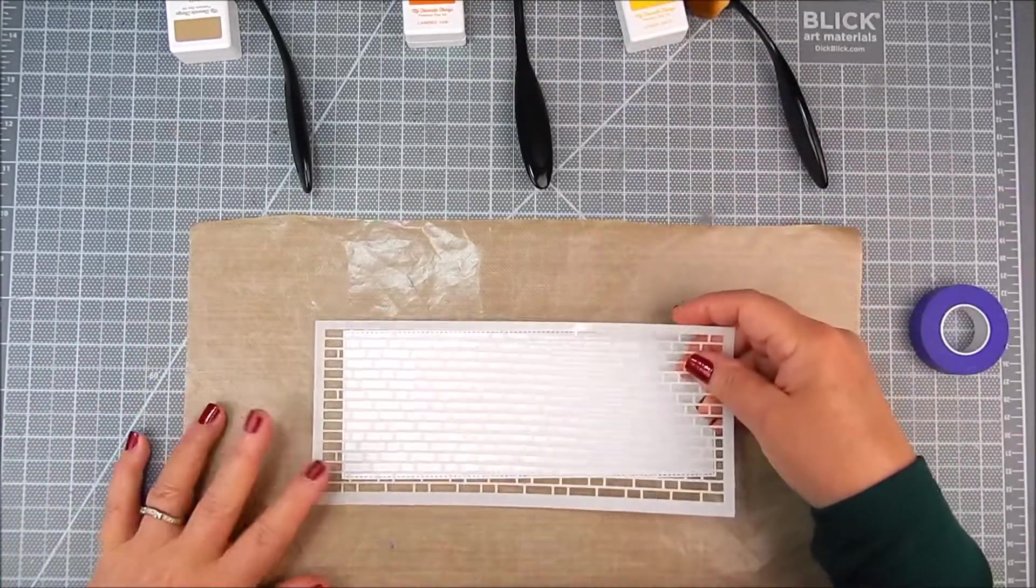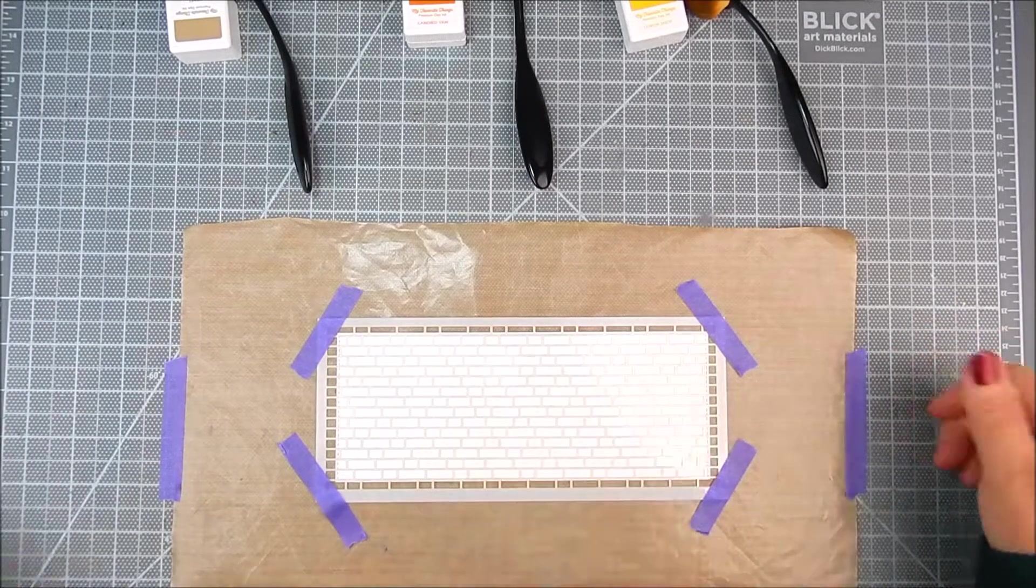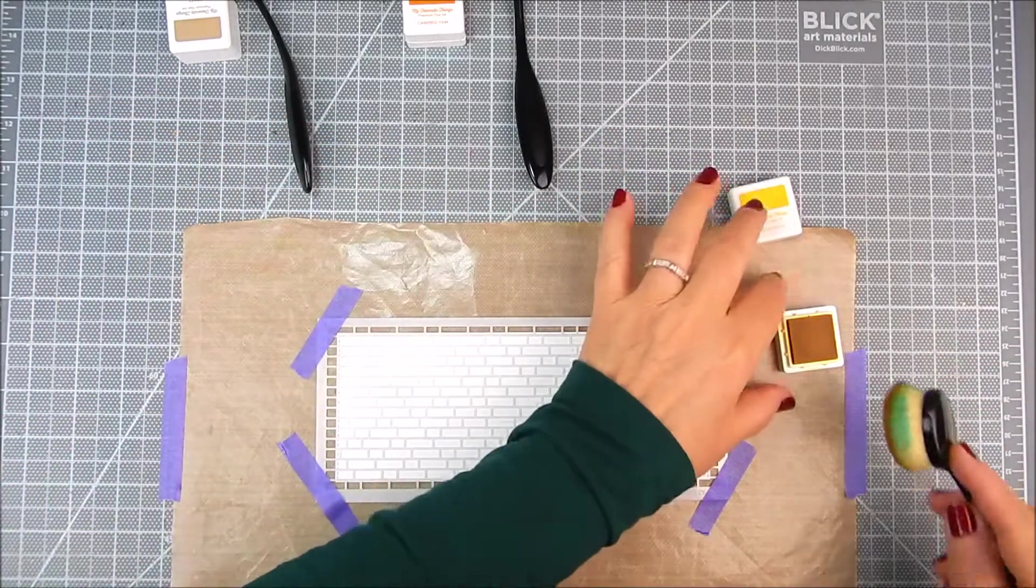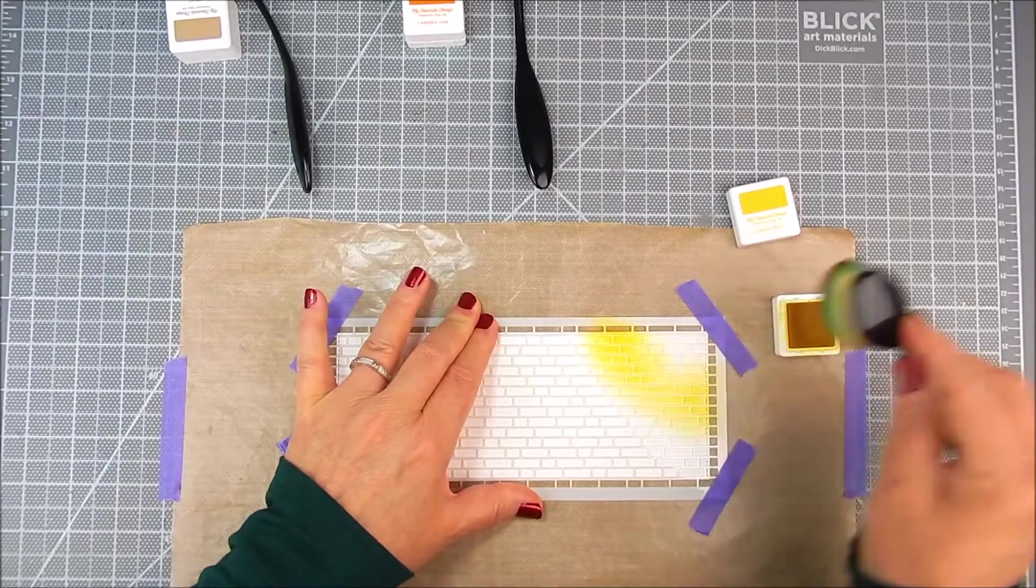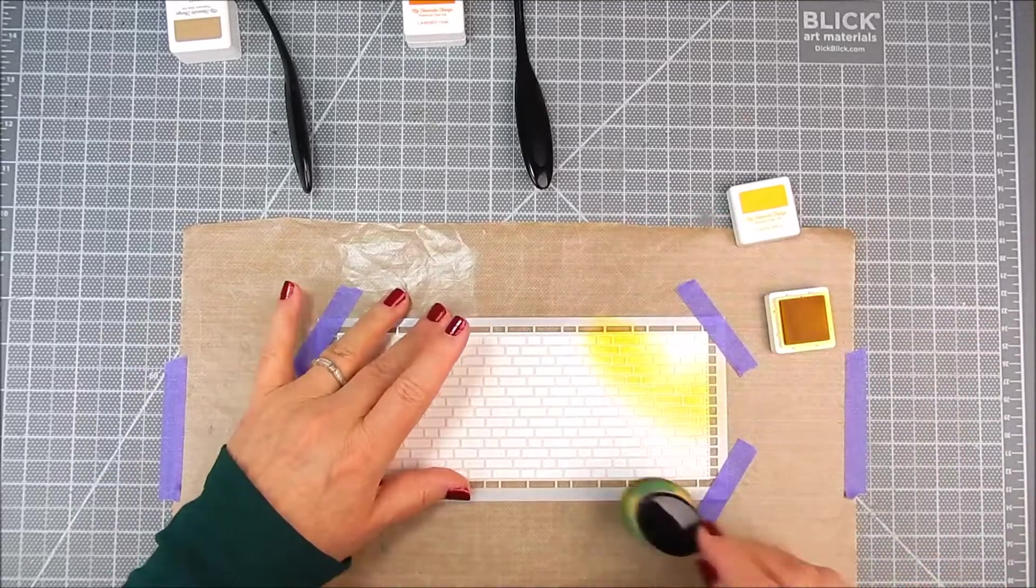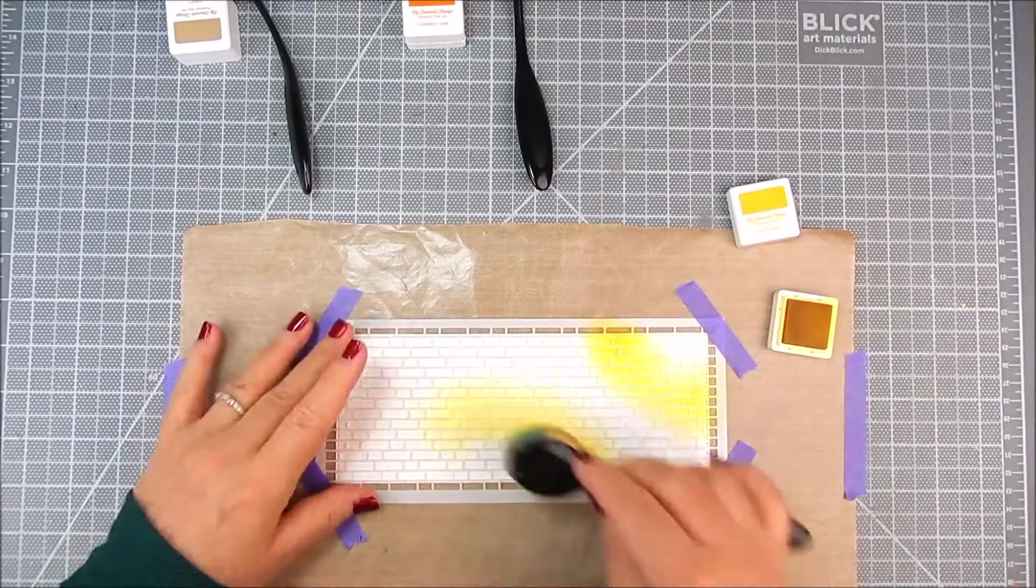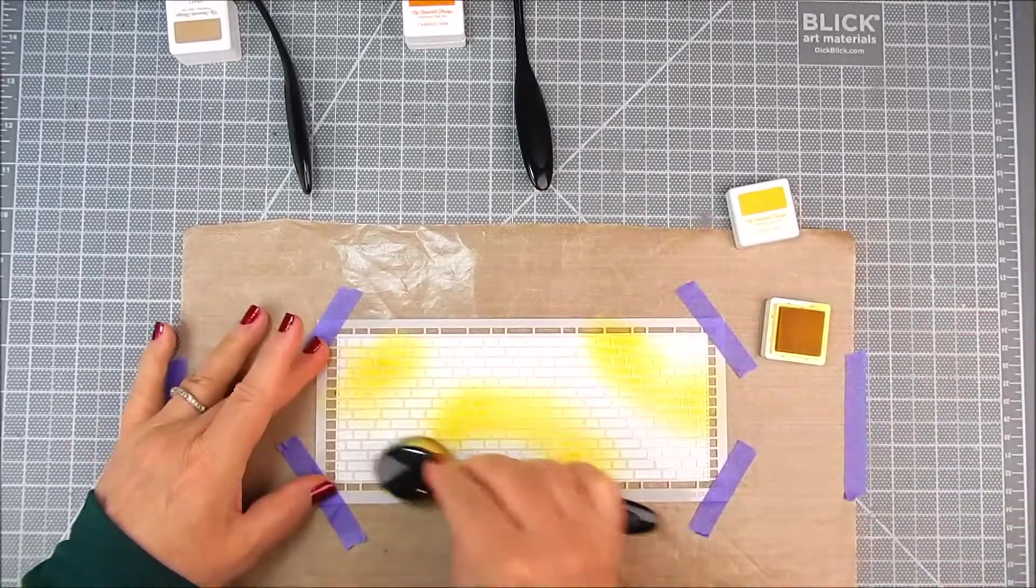I go ahead and get the stenciling ready. I put some purple tape, which is repositionable tape, on the back of that slimline panel and on the sides of the stencil just to hold it in place. I also put it on the background craft mat just so that everything would stay in place and won't move around.